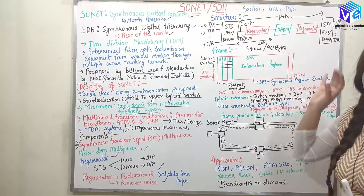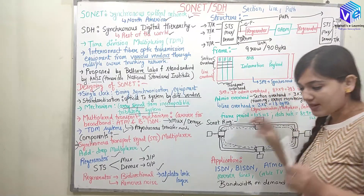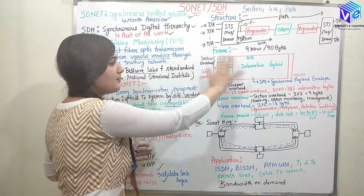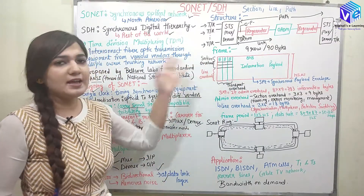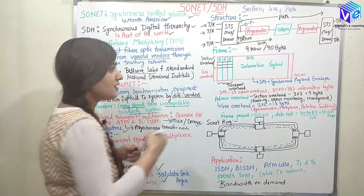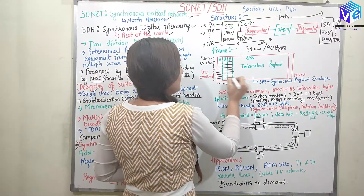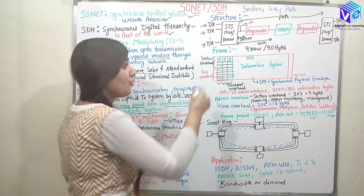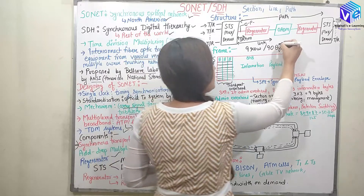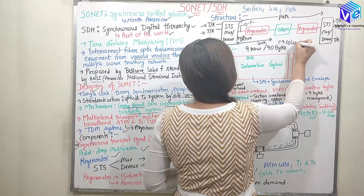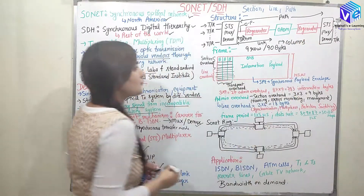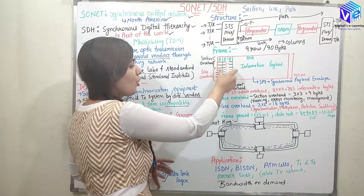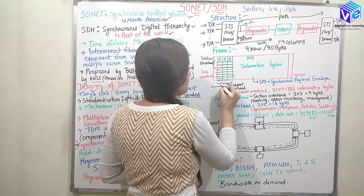This is the structure of the frame used to send information. The frame contains nine rows and 90 columns (90 bytes). The first three columns are called the transport overhead.